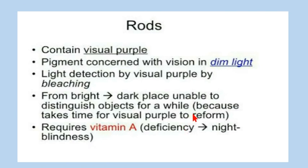Rods contain visual purple, a pigment concerned with vision in dim light. In bright light, this visual purple pigment bleaches out. When we move from bright light into dim light, for some time we are unable to see things properly because it takes time for visual purple to develop again. In people who are deficient in vitamin A, visual purple cannot form properly, and they suffer from a disease known as night blindness — the person is unable to see in dim light.